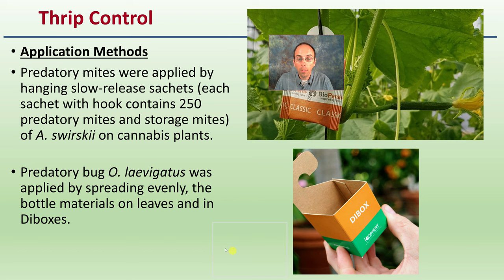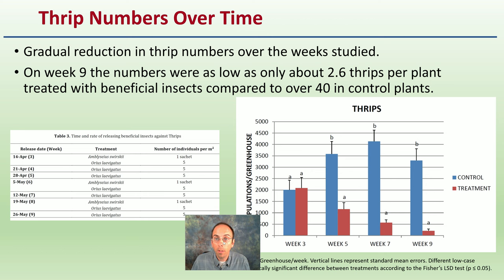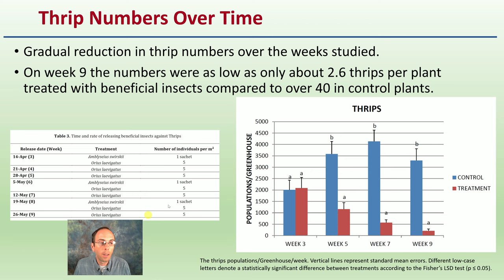The exact method of thrip control — how do we apply these insects? They can be used with slow-release sachets. Each contained about 250 predatory mites of the swirskii type, and then of the Orius type as well. This was applied by spreading evenly through bottles placed among the leaves and also using dye boxes, which are basically little boxes that hang on your plants. On week nine, it was as low as only about 2.6 thrips per plant in plants treated with beneficial insects.